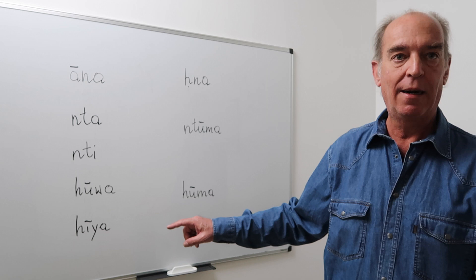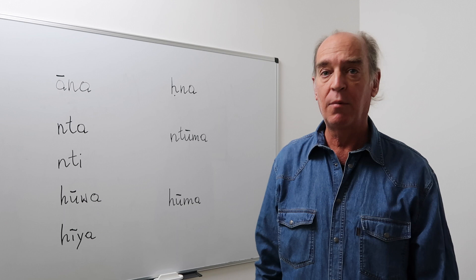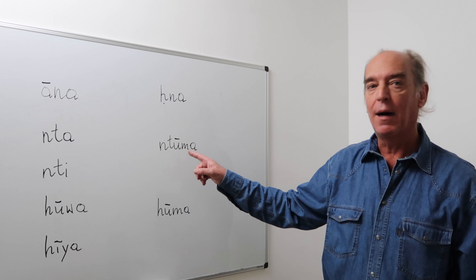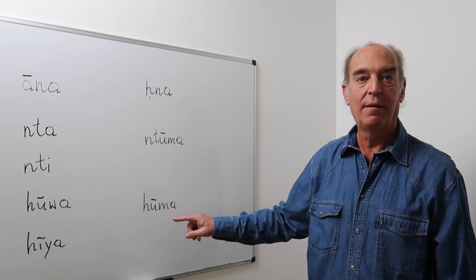In the plural, we have Hna for 'we,' Ntuma for 'you' — men or women — and Huma for 'they,' men or women.